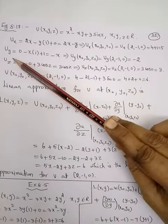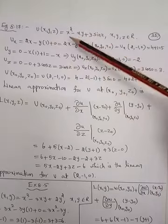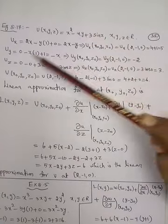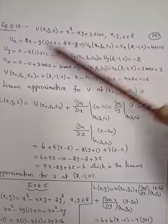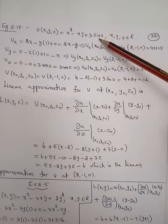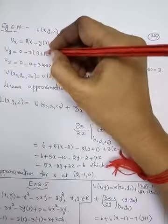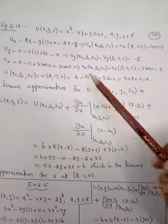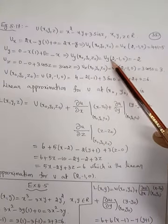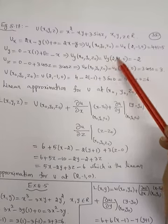Now for u_y: differentiating u with respect to y. x² is a constant so it gives 0, minus x times y where differentiation with respect to y is 1, so we get -x. The term 3sin(z) has no y, so it is a constant giving 0. Therefore u_y = -x. At (x₀, y₀, z₀) = (2, -1, 0), substituting x=2 gives u_y = -2.